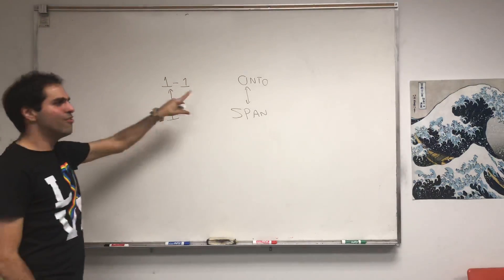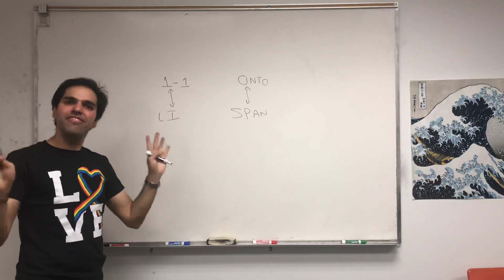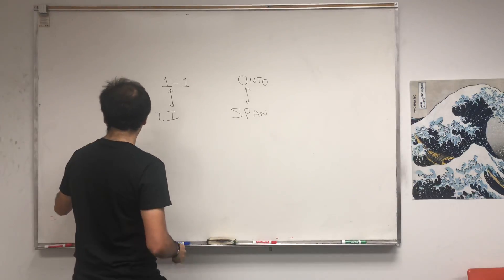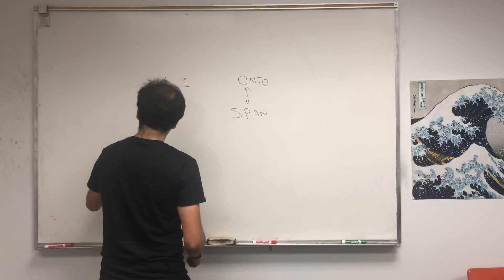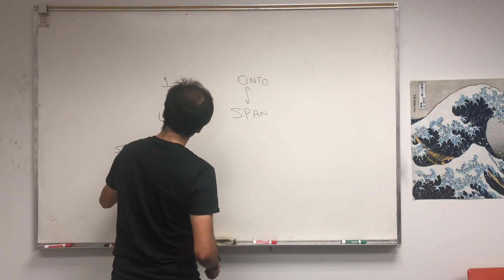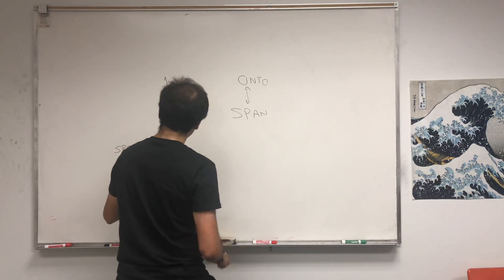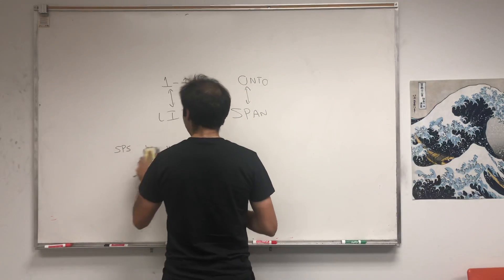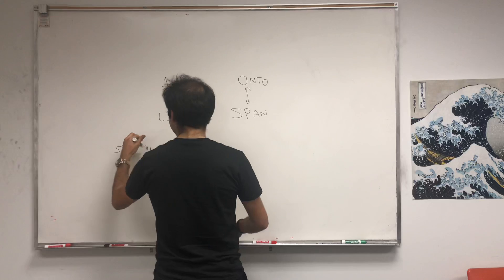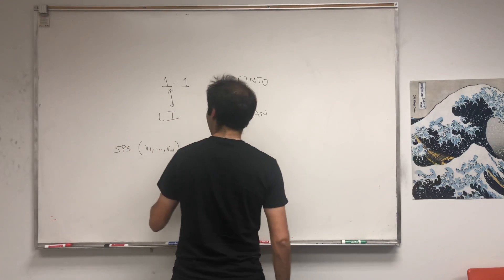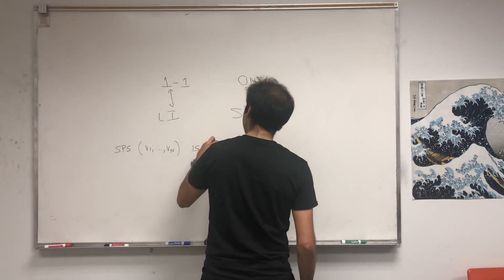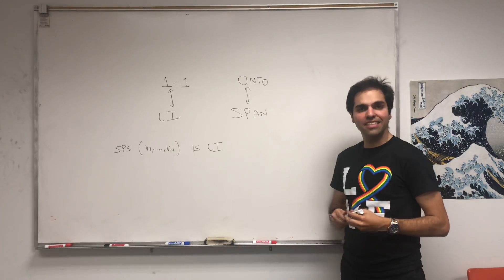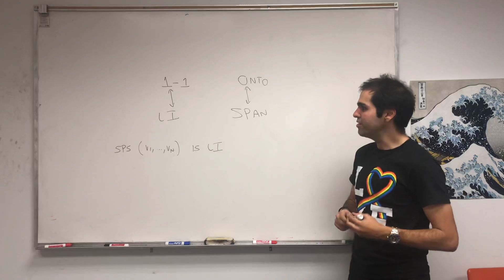But today, we just want to focus on this very beautiful fact. So suppose v1 up to vn is a linearly independent list. It's the same definition as linearly independent sets, but where the order matters.